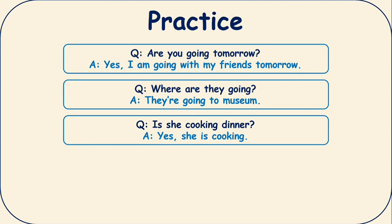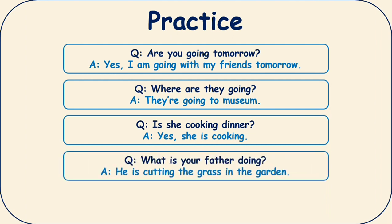And if she's not cooking, so you can say no, she's not cooking. Then: what is your father doing? If someone asks you what's your father doing, you can say he is cutting the grass in the garden right now. His current continuous action is he is cutting the grass in the garden.